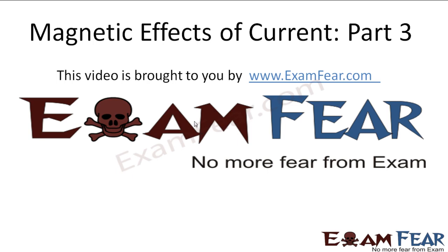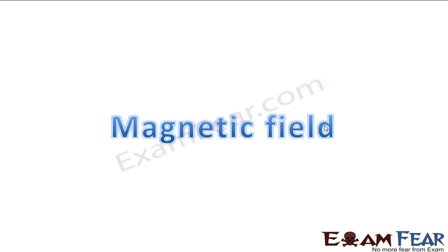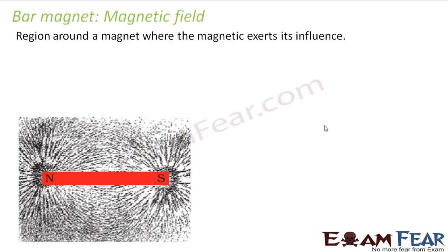This video on magnetic effects of current part 3 is brought to you by examfewer.com. So that was a brief idea about magnets — what they are and their basic properties. Now we will talk about magnetic field. Magnetic field is the region around the magnet where the magnet exerts its influence. If you place an object beyond this magnetic field, it will not be affected. For example, nails placed within the magnetic field get attracted, but nails placed far beyond the field do not.